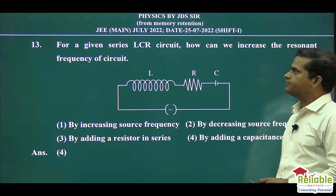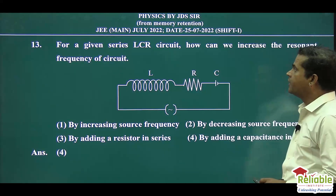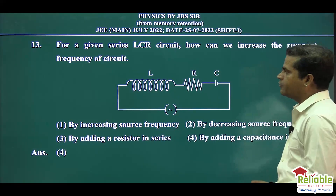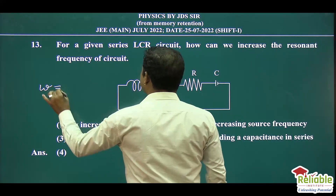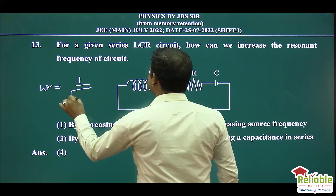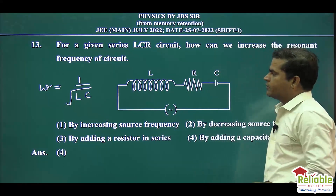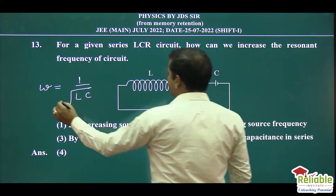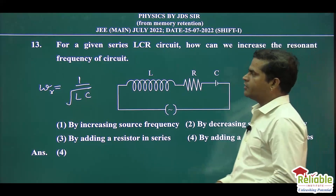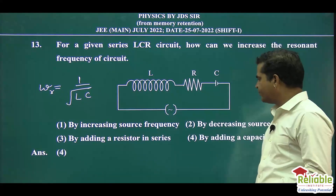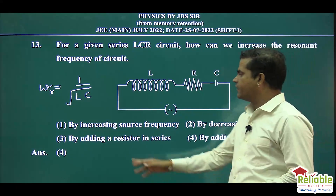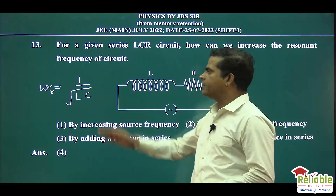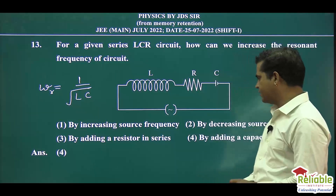Question number 13 is related to alternating current. An LCR circuit is given. We need to find what will increase the resonant frequency of the circuit. The angular resonant frequency omega equals 1 upon root LC. The resonant frequency depends on the inductor L and capacitor C — not on the source frequency. So increasing or decreasing source frequency is incorrect, and adding a resistor in series is also incorrect. By adding a capacitor in the circuit, the value of omega r will change. That's why option number 4 is correct.